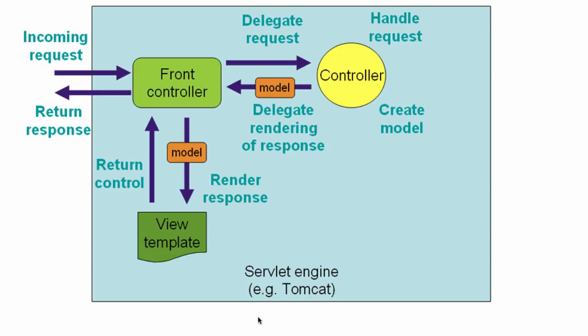Let's now understand the architecture of Spring MVC with a small diagram. The most important part of the Spring MVC architecture is the front controller — the dispatcher servlet. The front controller finds the right controller to handle the request. When we said slash login, the front controller URL we configured was spring-mvc, so anything starting with spring-mvc would come to this front controller dispatcher servlet.